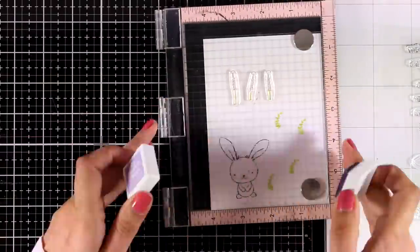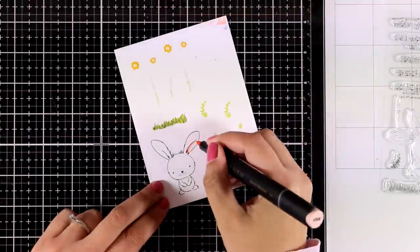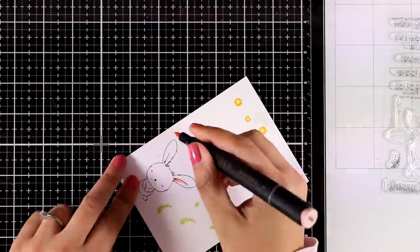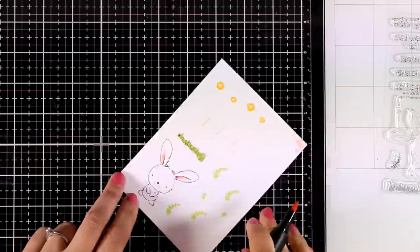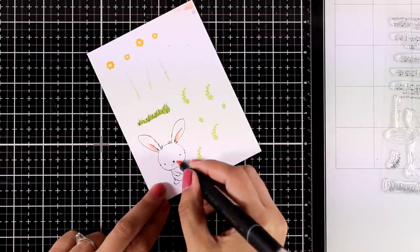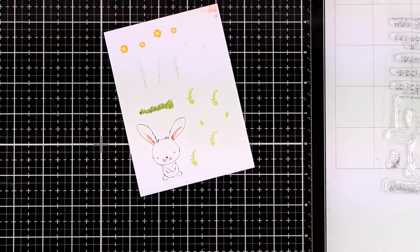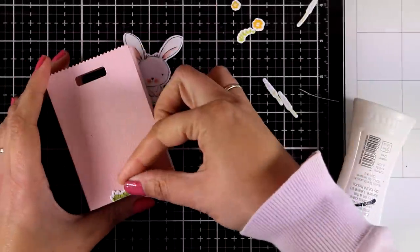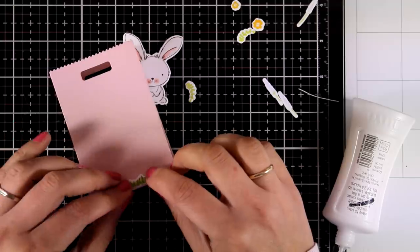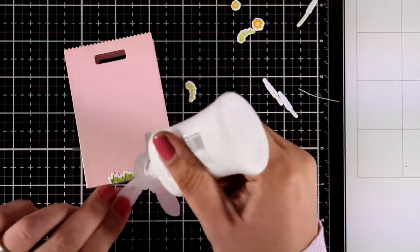Now I went ahead and used my alcohol markers to add some color on the bunny. I'm keeping the bunny mostly white so I'm only going to add some pink touches as well as some light gray shadow and I used the matching dies to cut out everything.